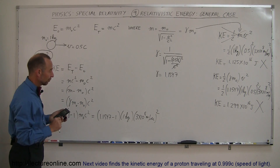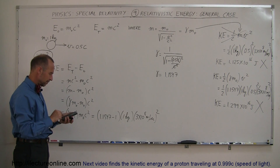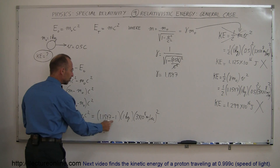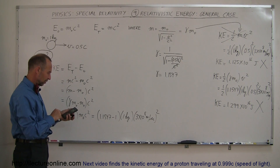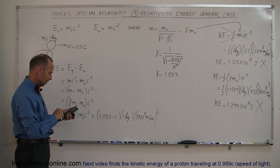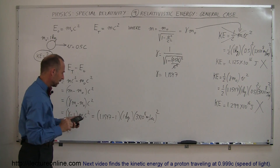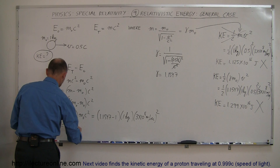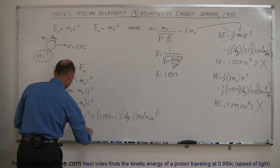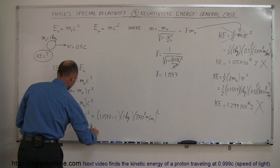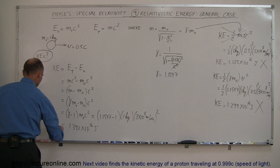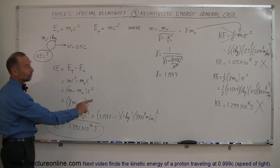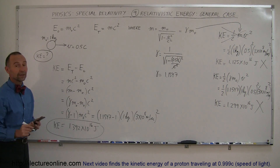So 3×10⁸ squared times 0.1547 — which is gamma minus 1 — gives us a kinetic energy equal to 1.392×10¹⁶ joules. That is the correct answer, and notice it is very different from the two incorrect answers we got before.